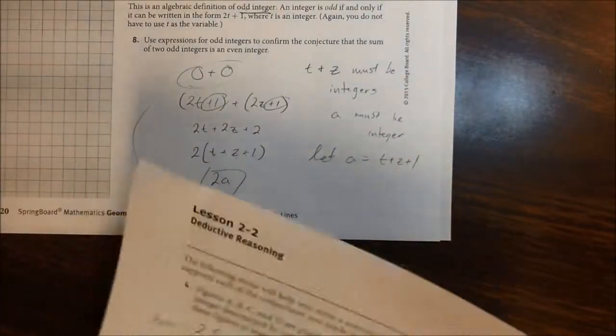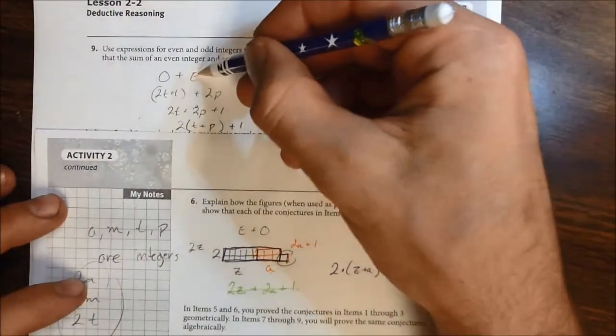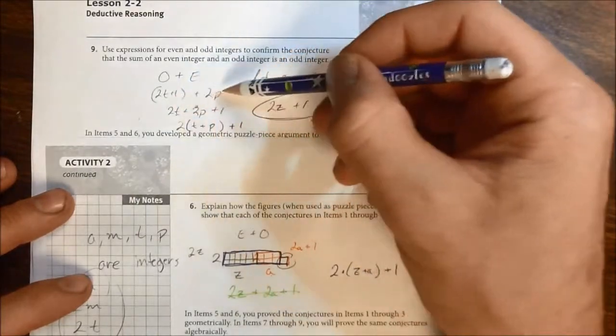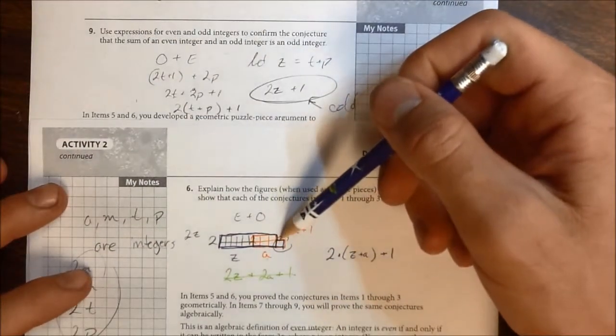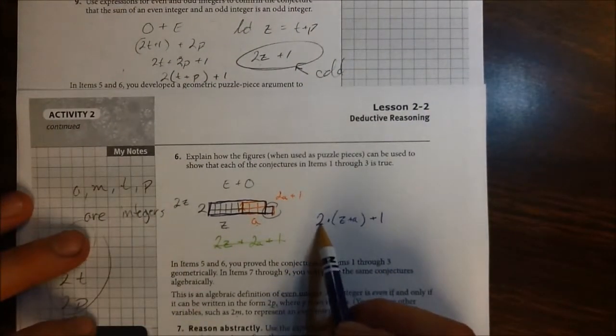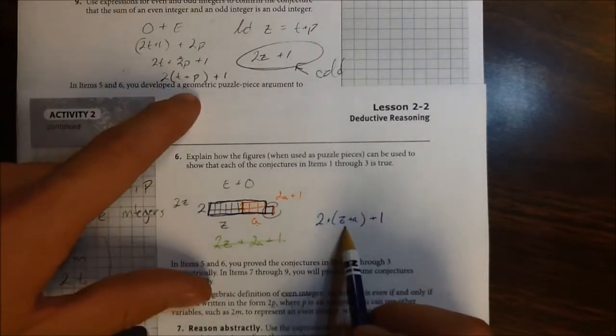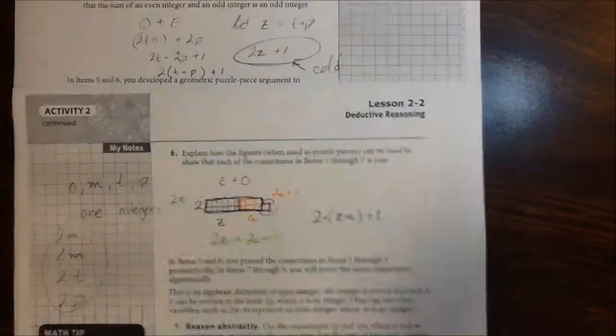And then the last one, which we talked about, right here. We had an odd and an even. This odd integer, 2t plus 1, and then plus an even. There's the geometric representation for that. And so you got the same thing. You have the rectangle that is 2 by something, 2 integers added up, and then you have that plus 1. That plus 1 is what makes it odd.